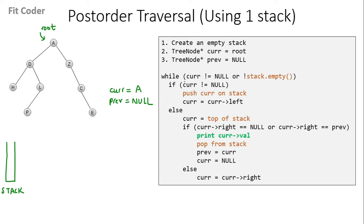So now `current` is equal to A. We go inside the while loop. We check this if condition — this is also true. So we push A on the stack, and `current` is now left of A, which is D. We again come in the while condition. `Current` is not equal to null, so we push D on the stack, and `current` is now left of D, which is H. We again come in the while condition. `Current` is not equal to null. We push H on the stack, and `current` is now left of H, which is null.